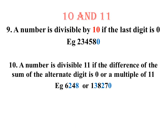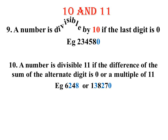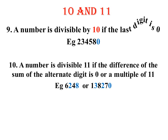The next one is 10. A number is divisible by 10 if the last digit is 0. Like in our example, the last digit is 0, therefore the number is divisible by 10 — just as simple as that.